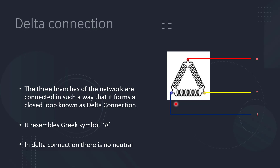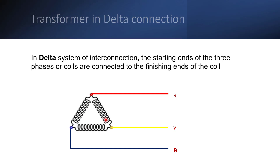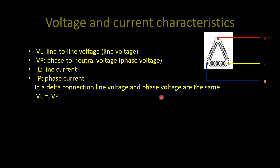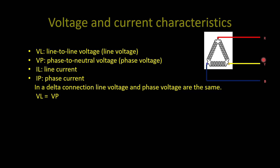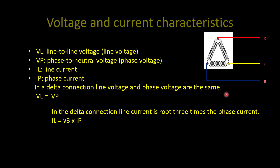In delta connection, there is no neutral. In star connection, three windings are connected together at a common neutral point, but in delta connection there is no neutral. In delta connection, the starting end and finishing end is connected to the adjacent coil, forming a closed loop. This can be done in the primary and secondary winding of a transformer. In terms of voltage and current characteristics: VL equals VP — line voltage and phase voltage are the same. In delta connection, line current equals root 3 times phase current, so phase current equals line current divided by root 3.